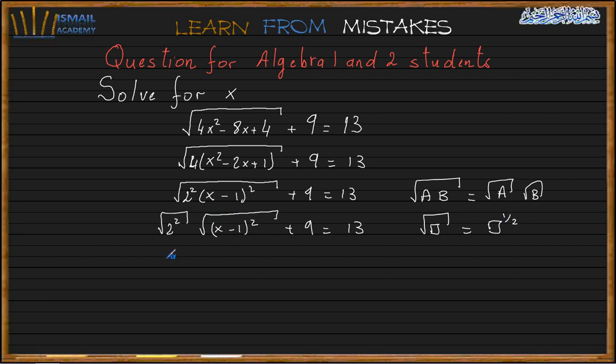So I'm going to change this one to power half. So it's going to be 2 squared to the power half times x minus 1 squared to the power half plus 9 equals power.